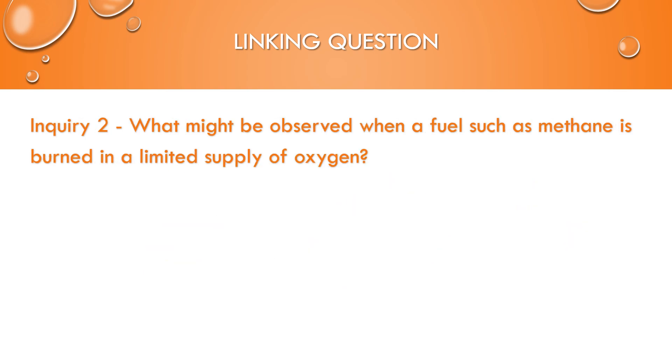And then this also links to one of your inquiry skills, what might be observed when a fuel such as methane is burned in a limited supply of oxygen. So in terms of observations, it's going to do that incomplete combustion. So it's producing carbon monoxide or carbon. But in terms of visual, if it's producing carbon, you'll be able to see a black sootiness being formed, which is the just elemental carbon being formed. And that's something that we can actually see versus the carbon monoxide, which you wouldn't be able to see.